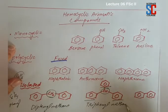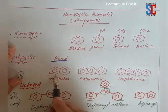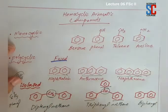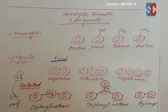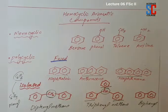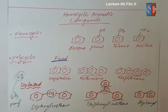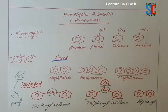And these are 4 phenyl groups attached with methane. Methane is CH4, teen hydrogen hatakar teen phenyl groups lagge — this is called triphenylmethane. And this is called biphenyl — though the phenyl groups are joined together, but the rings are not fused. These are examples of aromatic compounds — polycyclic homocyclic aromatic compounds with more than one ring.